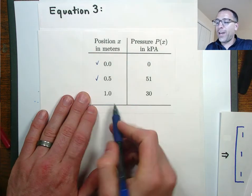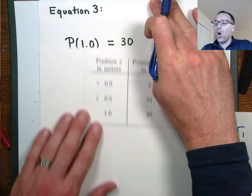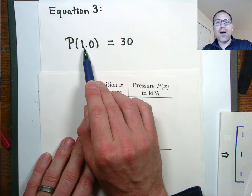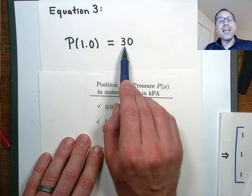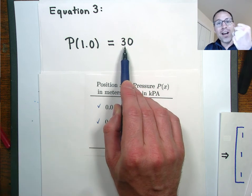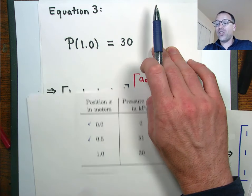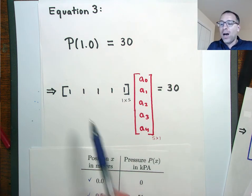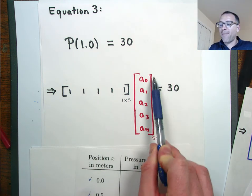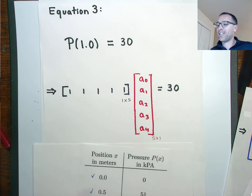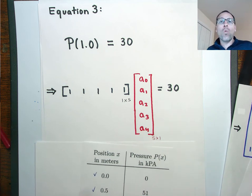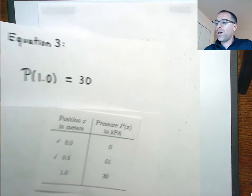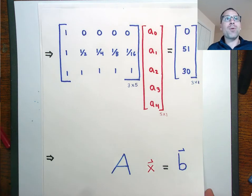The third equation that we have comes from the third data point. We know that the input to that is 1.0. So one meter down the barrel of a potato gun, the output is 30 kilopascal, the amount of pressure held up in that. And then we can jump immediately to the end. Hopefully, by this point, you kind of get the idea. I have a row of all ones, I have my unknown coefficients, and I have my right hand side 30.